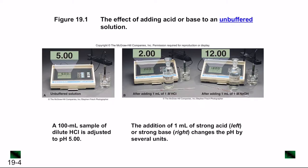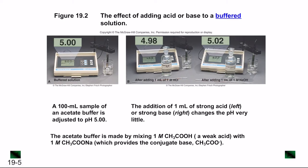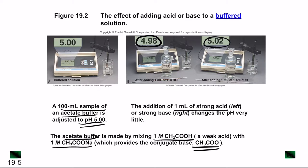For an unbuffered solution, say we have a 100 mL sample of dilute HCl adjusted to pH 5. When you add just 1 mL of strong acid, the pH reduces to 2, and when you add 1 mL of NaOH, the value increases to 12. Notice that just 1 mL can cause drastic changes in pH. Now for a buffered solution — 100 mL of an acetate buffer adjusted to pH 5 — when you add 1 mL of strong acid or base, the pH does not change appreciably.